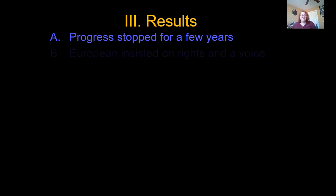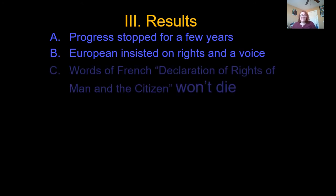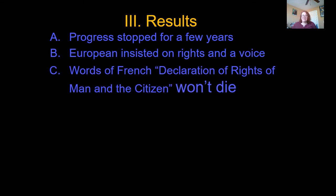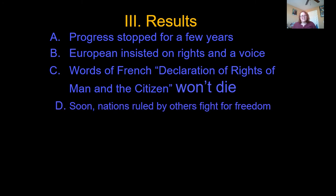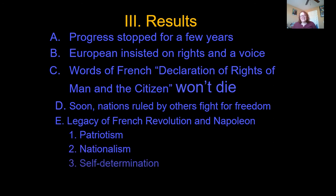As a result of the Congress of Vienna, progress stopped for a few years. But Europeans insisted on rights and a voice, and the words of the French Declaration of the Rights of Man and the Citizen wouldn't die so easily. Soon, nations that were ruled by others ended up fighting for freedom, and the legacy of the French Revolution and Napoleon would forever remain. Those ideas were patriotism, nationalism, and the idea of self-determination.